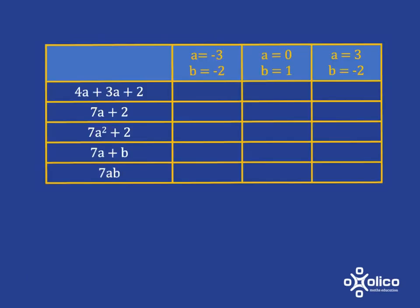Let's have a look at these expressions here and evaluate them at these values. So for example, when a is negative 3 and b is negative 2, we don't have to worry about b because there isn't a b in this one. So a is negative 3. We're going to get 4 times negative 3, which is negative 12. Then we're going to get 3 times negative 3, which is negative 9. Negative 12 plus negative 9 is negative 21, and then we have to add on 2, so we're going to get negative 19.